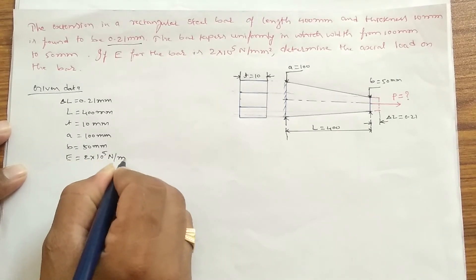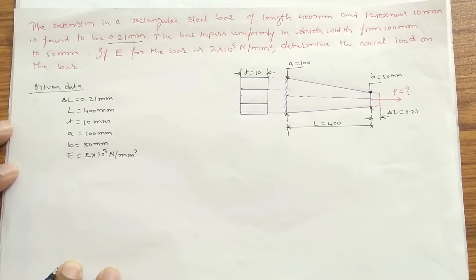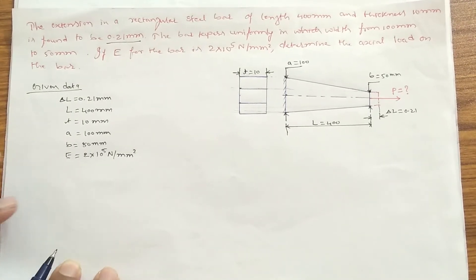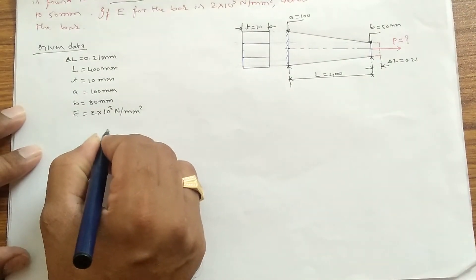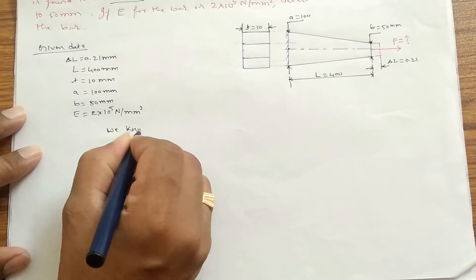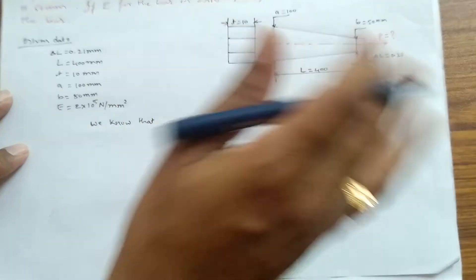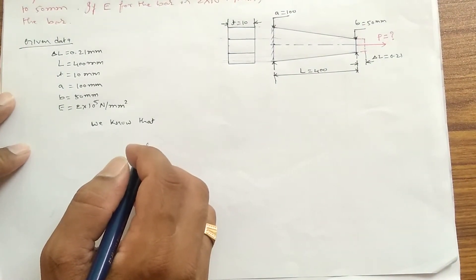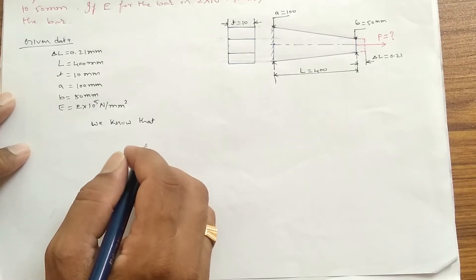Newton per mm squared. So these are all the given data. From this data, how can we find out P? So we know that for a tapered rectangular bar which is subjected to axial load...